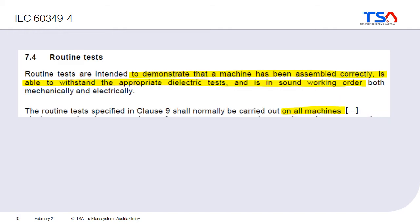Additionally, on every machine which is manufactured, a routine test is also done. This routine test should demonstrate that the machine has been assembled correctly, that it is able to withstand the dielectric test so the insulation is okay, and that it runs smoothly. It is not the full program of the type test — it is only a reduced test — and it should just confirm that the machine is okay and can be delivered. This should be done on all machines which are delivered.